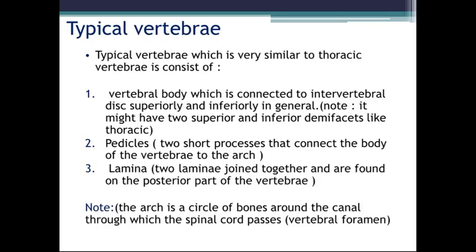The first region is the vertebral body. The vertebral body is connected to the intervertebral disc superiorly and inferiorly in general. Intervertebral discs are not bone — they are cartilage located between adjacent vertebral bodies. So above and below each vertebral body there are intervertebral discs, except for the first and last vertebrae.